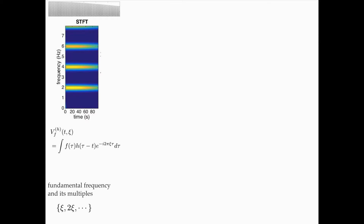This signal oscillates twice per second, so in the frequency domain at each time you get peaks at two, four, six, eight hertz. The two hertz is the fundamental frequency, and the four, six, eight hertz come from the non-sinusoidal oscillation — a one-periodic function can always be represented as a summation of cosine functions with multiple frequencies. This gives you the fundamental frequency and its harmonics: ξ, 2ξ, 3ξ, etc.